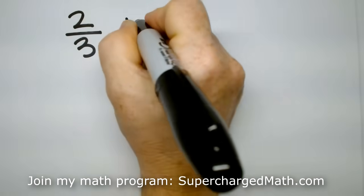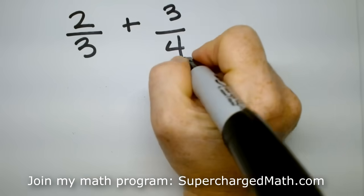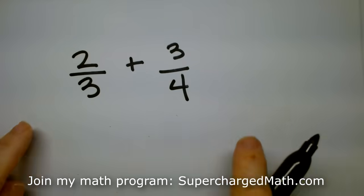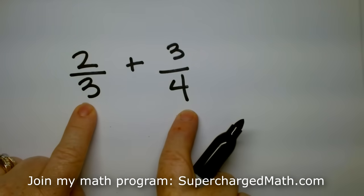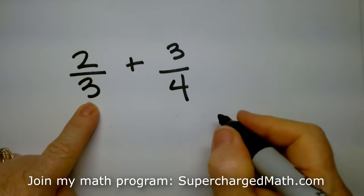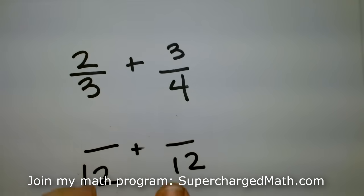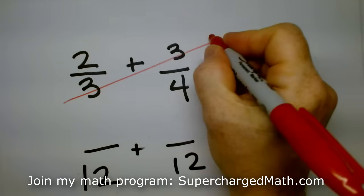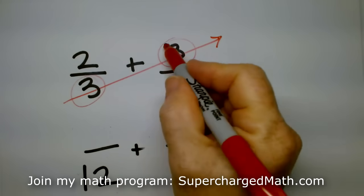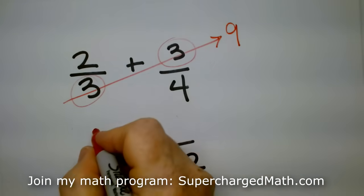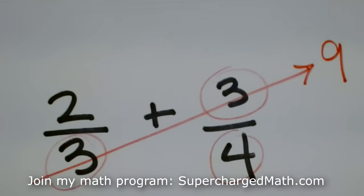Two-thirds plus three-quarters. We're going to add those. Now, the bottoms, they don't match, right? Watch this. What is three times four? Twelve. So I'm going to have a twelve plus a twelve. Good. What is three times three? Three times three is nine. What is four? Let me do it in a different color. Four times two.